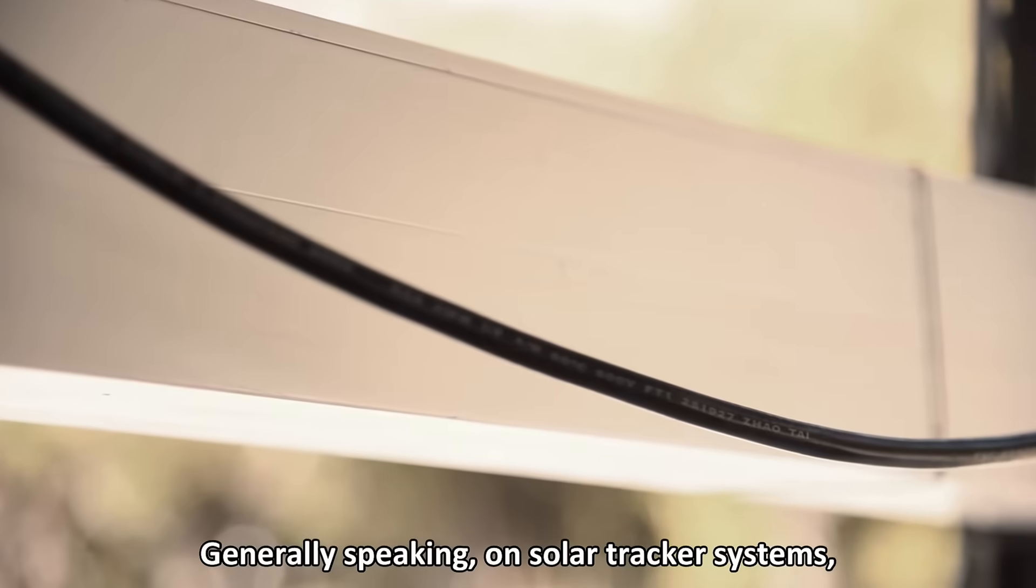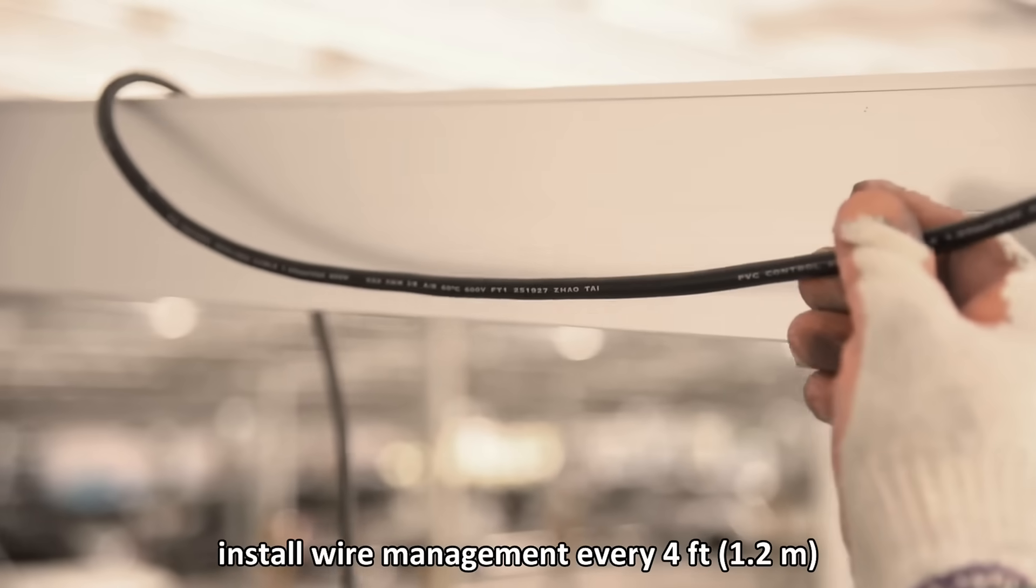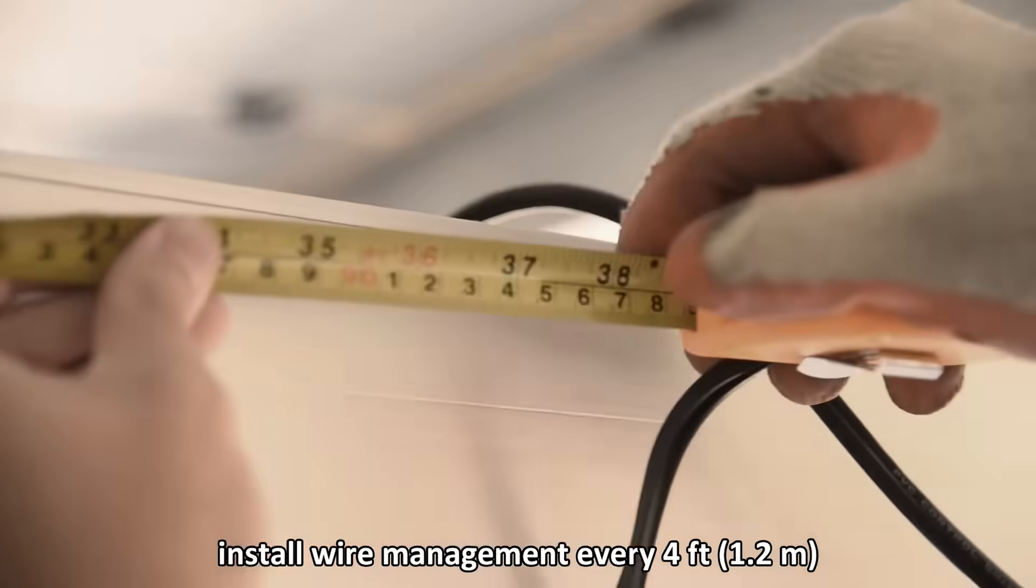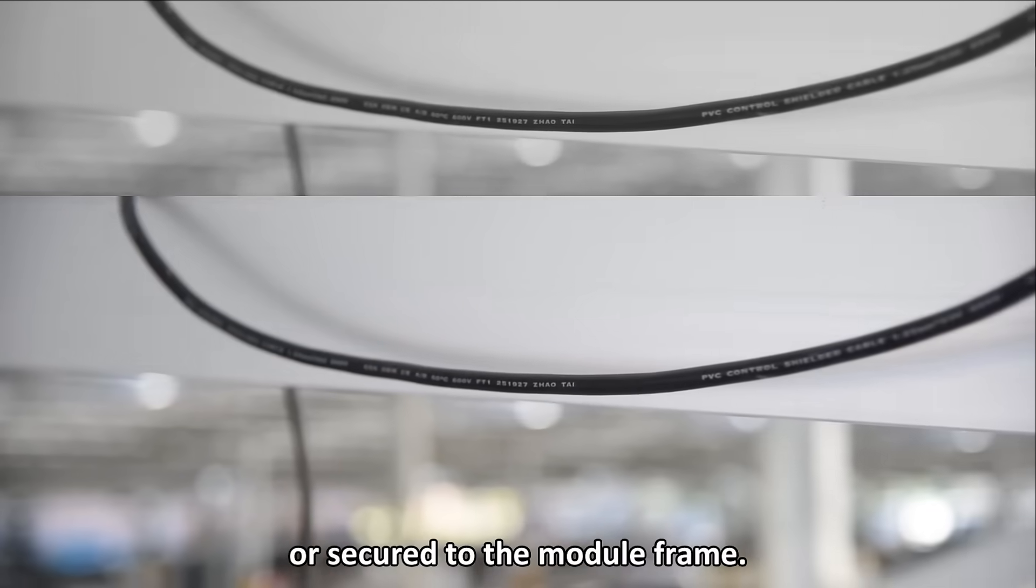Generally speaking, on solar tracker systems, install wire management every 4 feet or less along the torque tube or secured to the module frame.